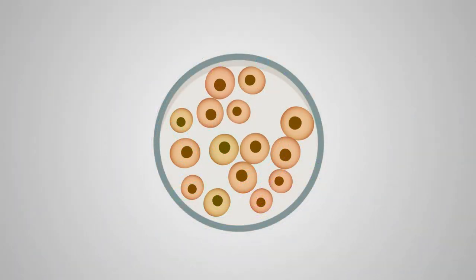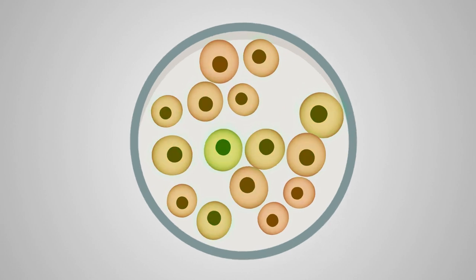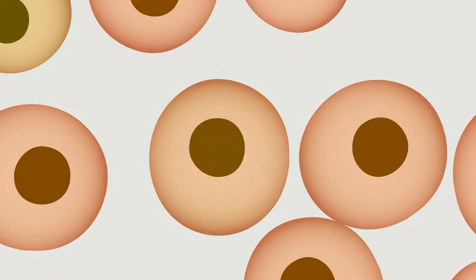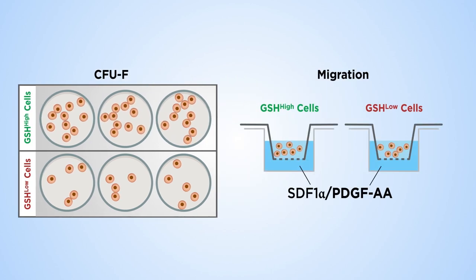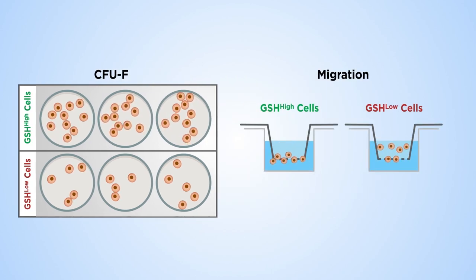The team tested the difference between stem cells with varying glutathione levels and found very interesting results. The glutathione-high stem cells outperformed all other stem cells. Not only could more of the cells self-replicate, they could also migrate faster. In essence, glutathione-high cells showed increased stemness.